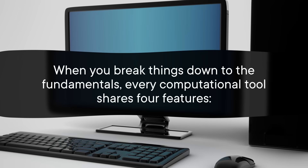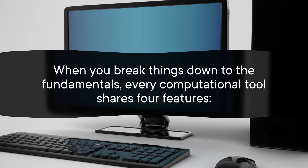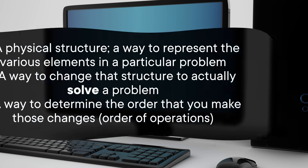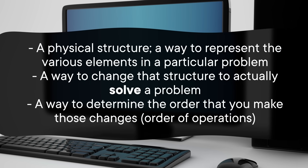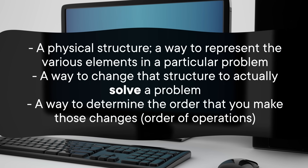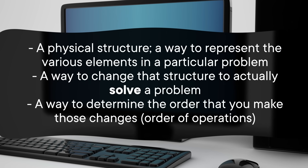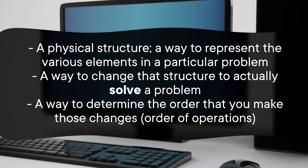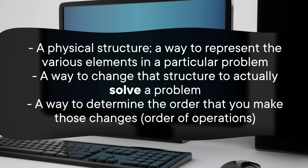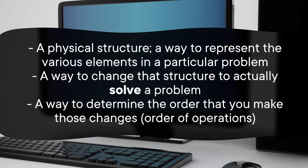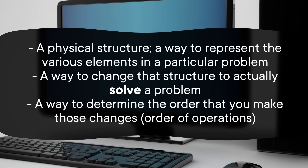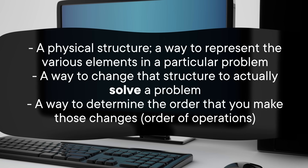When you break things down to the fundamentals, every computational tool shares four features: a physical structure, a way to represent the various elements in a particular problem, a way to change that structure to actually solve a problem, and finally, a way to determine the order that you make those changes — in other words, the order of operations.